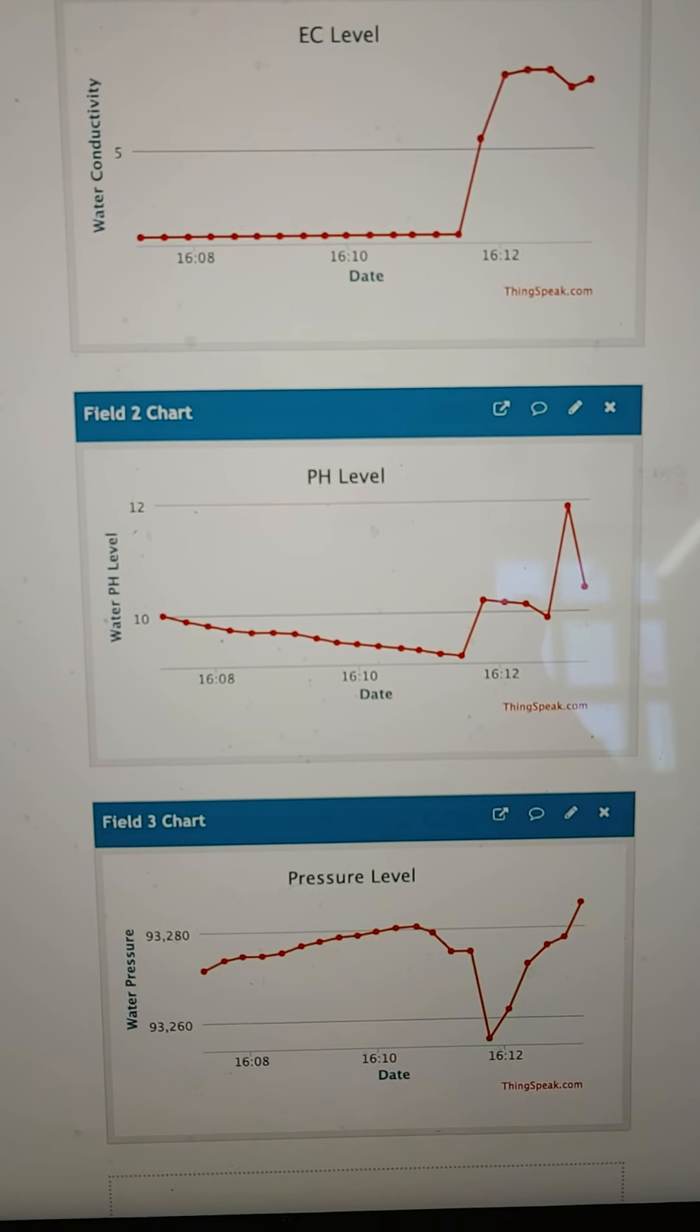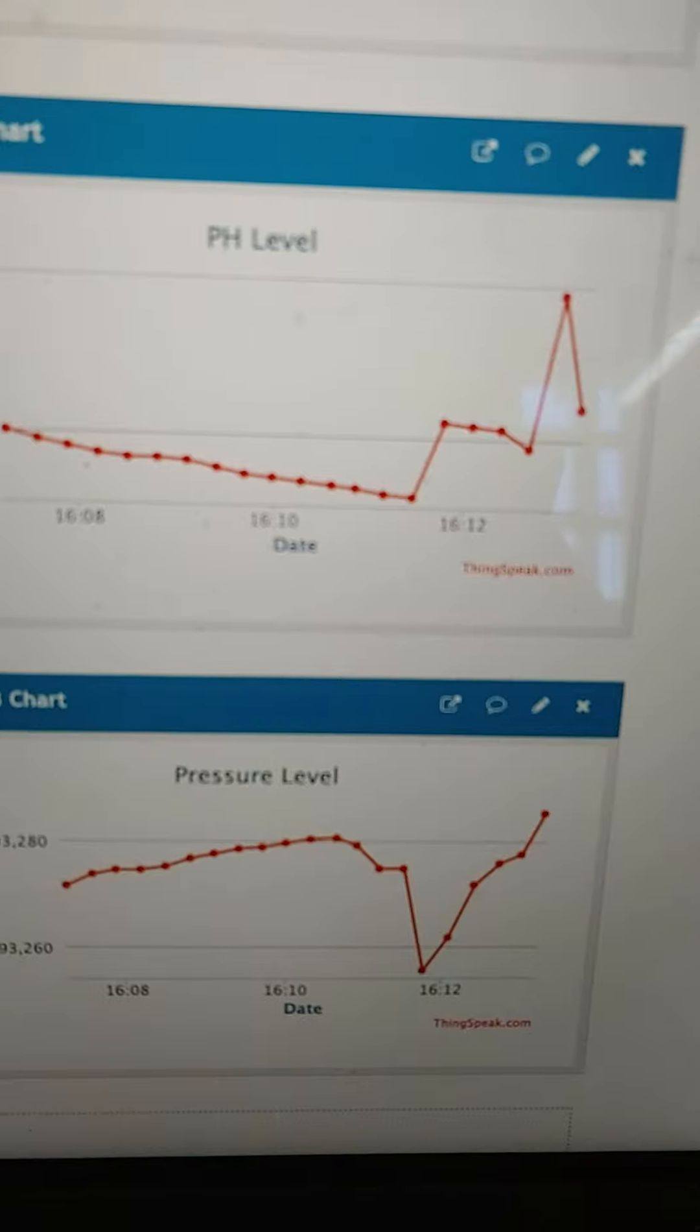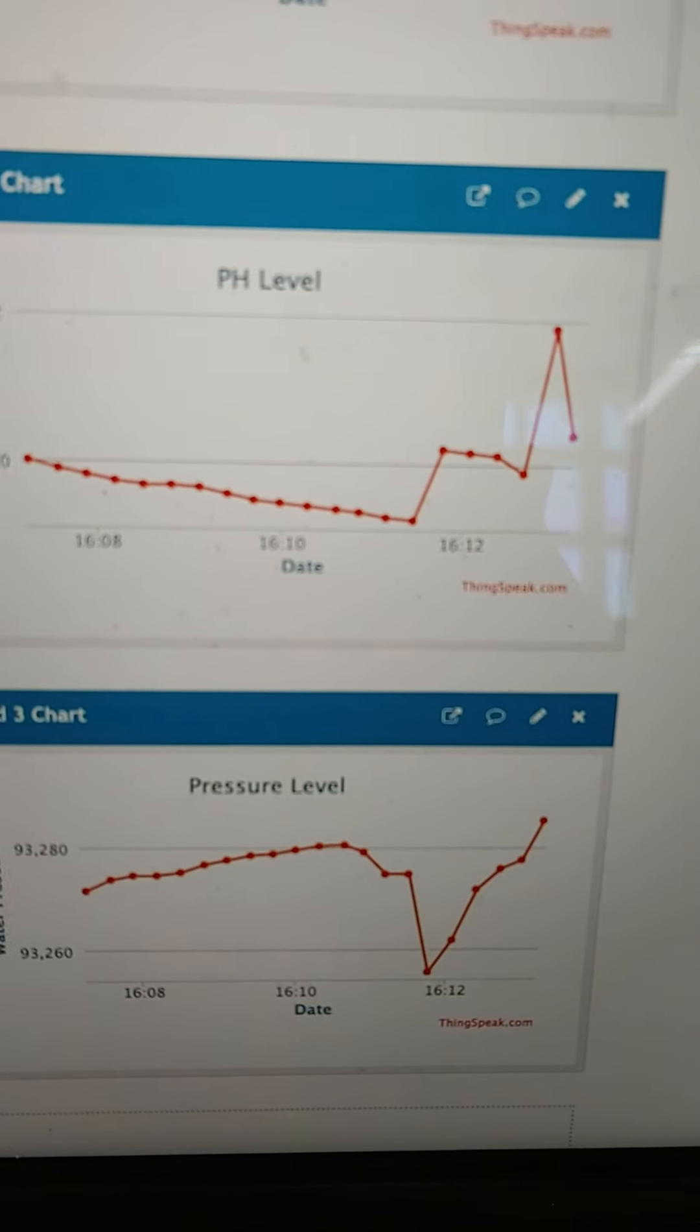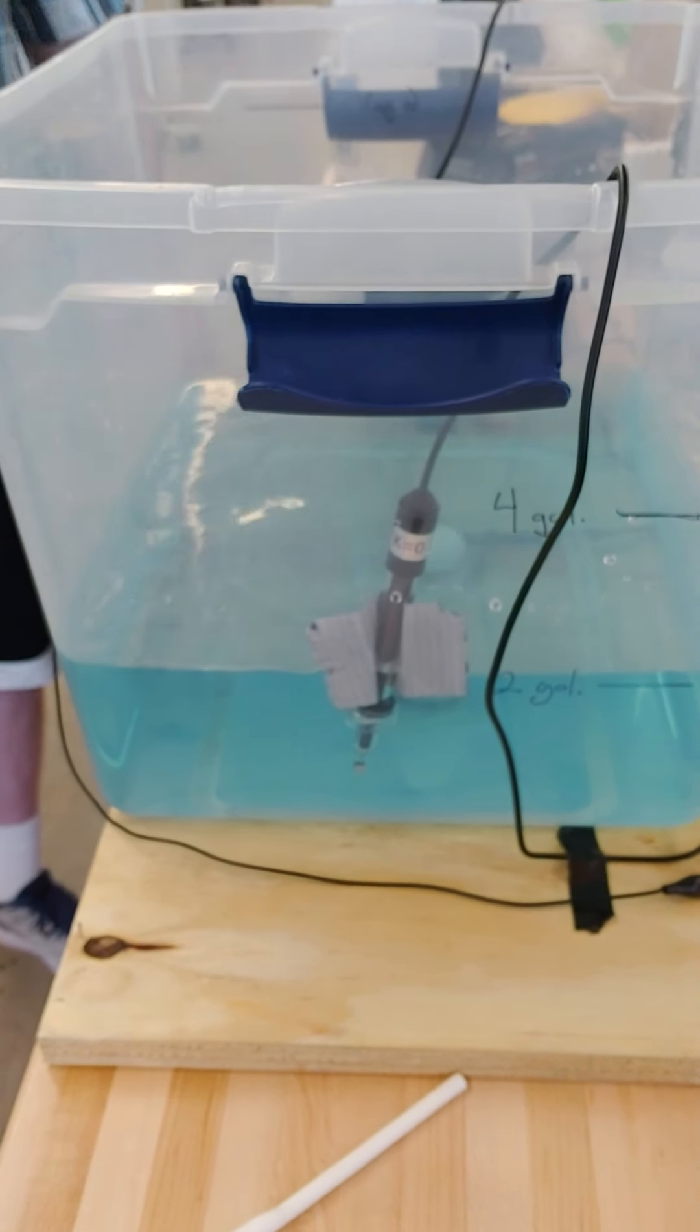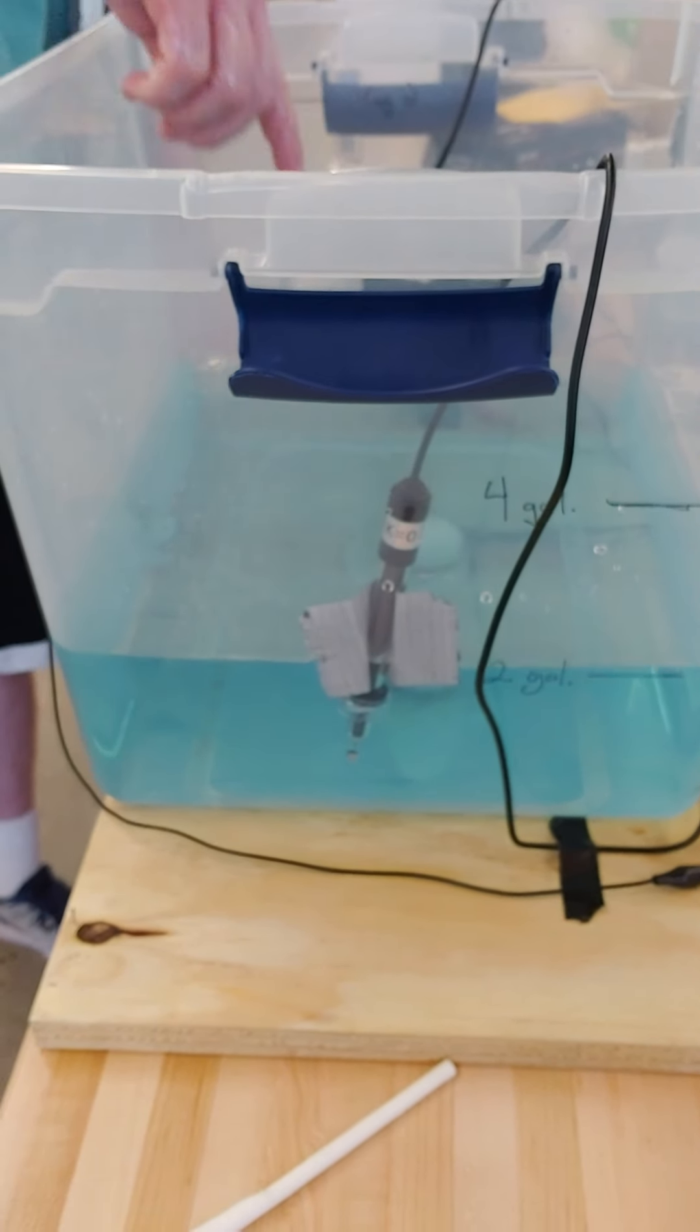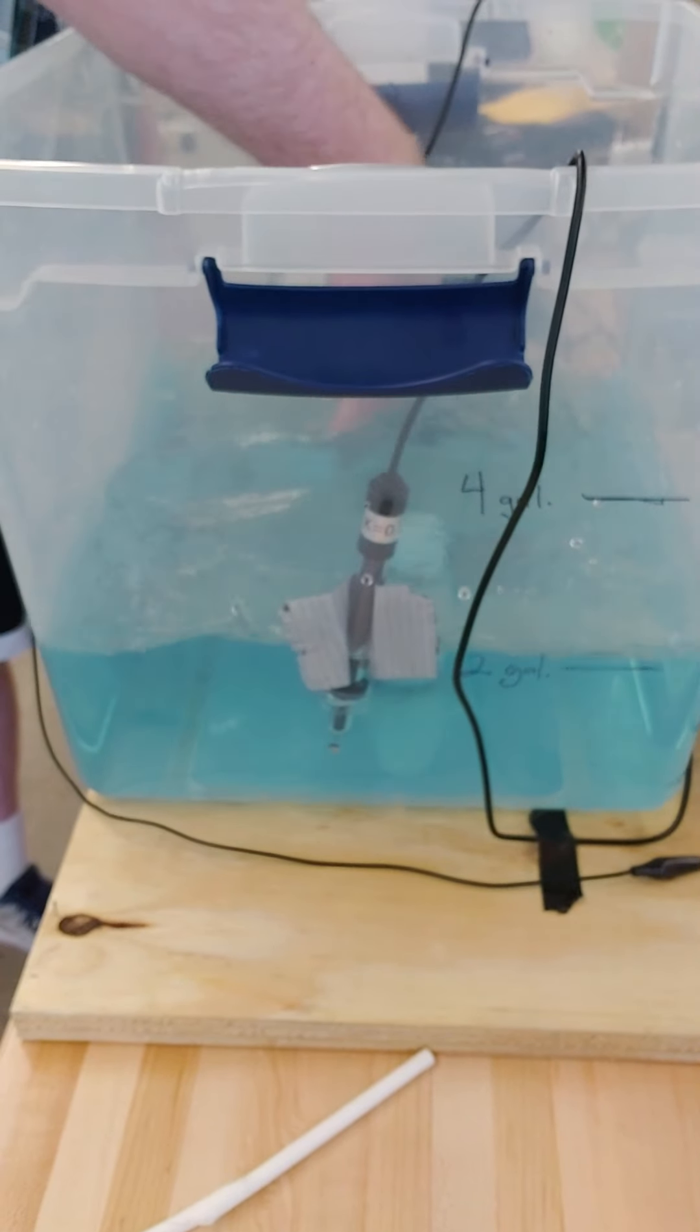And pressure shoots up as well as you can see. We do see that little dip in there and that's simply because of the stirring that is going on in the tank. Whenever we stir, the pressure on it just goes all over the place.